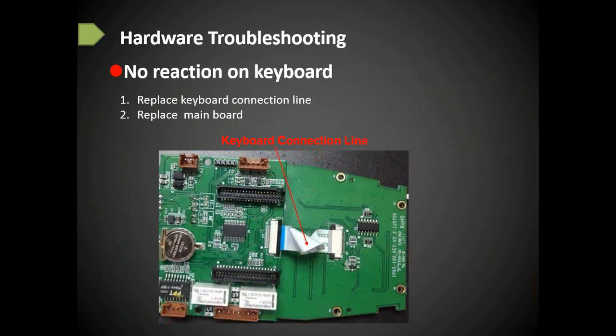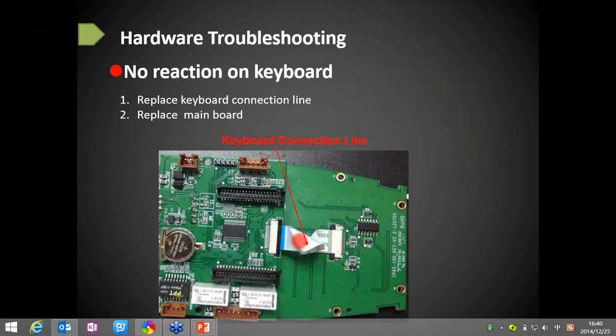Number three: no reaction on the keyboard. The MA500 added the keyboard as a new feature compared to MA300. If you find the keyboard has no reaction, first check with your customers whether they broke or changed any wires — that could cause the keyboard to stop working. If no wires were changed, try replacing the keyboard connection line. That should be useful in dealing with these problems.